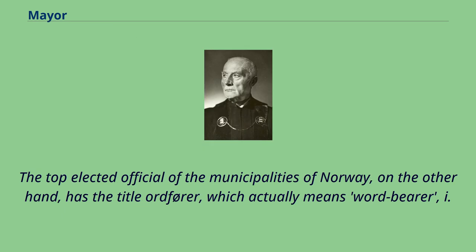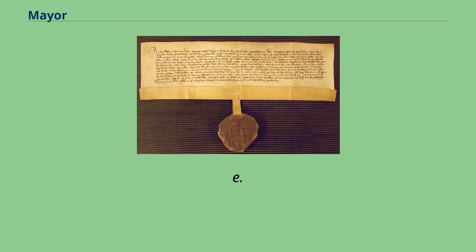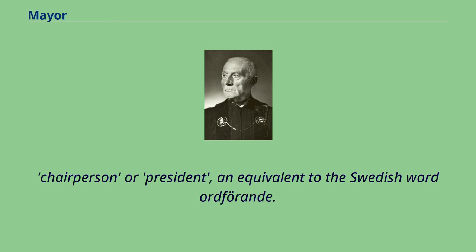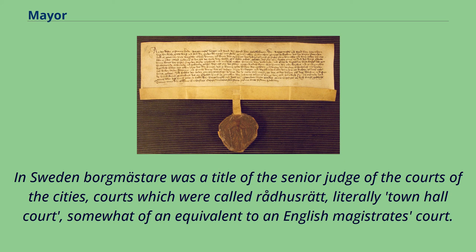The top elected official of the municipalities of Norway, on the other hand, has the title ordfører, which actually means word-bearer, i.e. chairperson or president, an equivalent to the Swedish word ordförande. In Sweden, borgmester was a title of the senior judge of the courts of the cities, courts which were called rådhusrätt, literally town hall court, somewhat of an equivalent to an English magistrate's court. These courts were abolished in 1971.